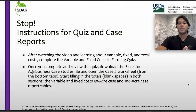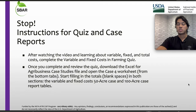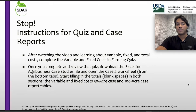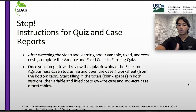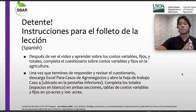Now, these are the instructions for the quiz and case report. After watching the video and learning about variable, fixed, and total cost, complete the variable and fixed costs in farming quiz. Once done with the quiz and the review, download the Excel for Agribusiness Case Studies file and open Case 4 Worksheet, located in the bottom tabs of the software. Start filling in the blanks for the totals in both sections: variable and fixed costs for 50 acres, and the second section for the 100-acre case report tables.